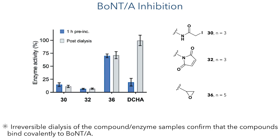To confirm that inhibition was due to covalent linkage, the researchers carried out irreversible dialysis on samples taken at one hour after incubation. This dialysis removes any compounds not covalently linked to the neurotoxin, and these studies showed almost identical results before and after dialysis. However, in the DCHA sample, a large difference was seen, as this compound is a reversible inhibitor that is removed by dialysis, allowing BoNT-A activity to be restored.